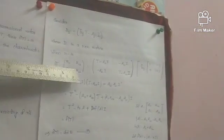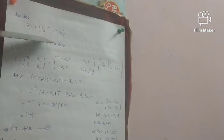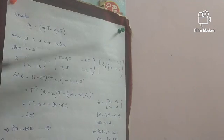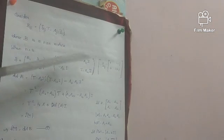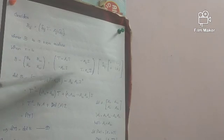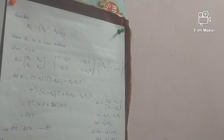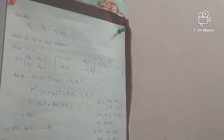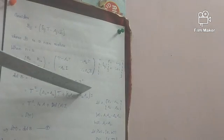Now B-ij equals delta-ij times T minus a-ij times I. So B11 equals delta-11 times T minus a11 times I. Since delta-11 equals 1, B11 equals T minus a11·I. And B12 equals delta-12 times T minus a12·T, which equals negative a12·T since delta-12 equals 0.